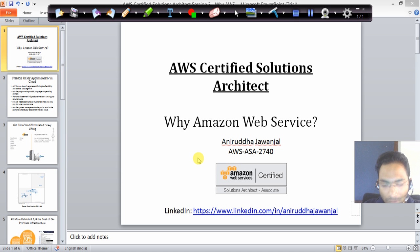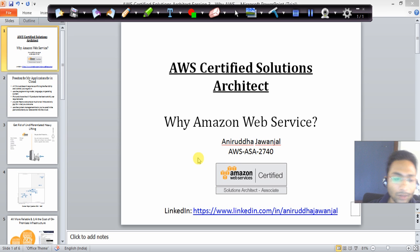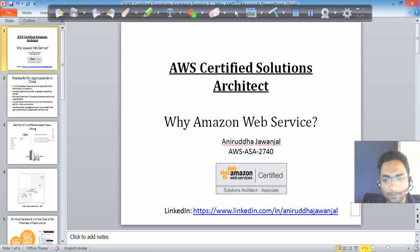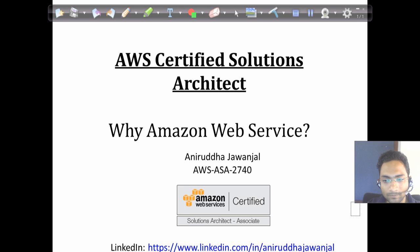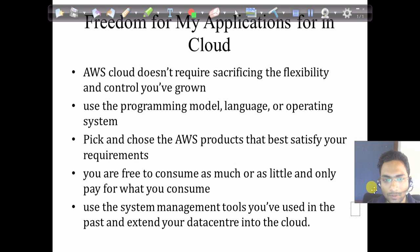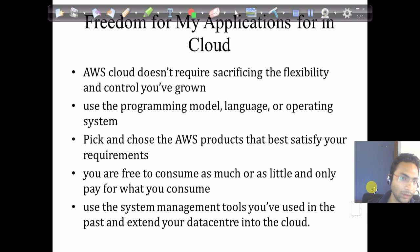Whenever we migrate to cloud, there should not be any restrictions on the number of services or applications we use, and we should not have to trade off availability or flexibility. AWS is very focused on this — when you migrate to cloud, you don't sacrifice any components of your existing architecture or system.